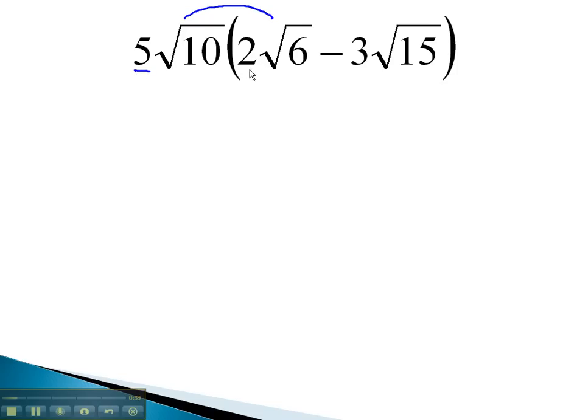We multiply the outside numbers to get 10, and inside the radical, 10 times 6 is 60. We continue distributing by multiplying through by the negative 3√15. 5 times negative 3, the coefficients on the outside, is 15, and inside the radical, 10 times 15 is 150.